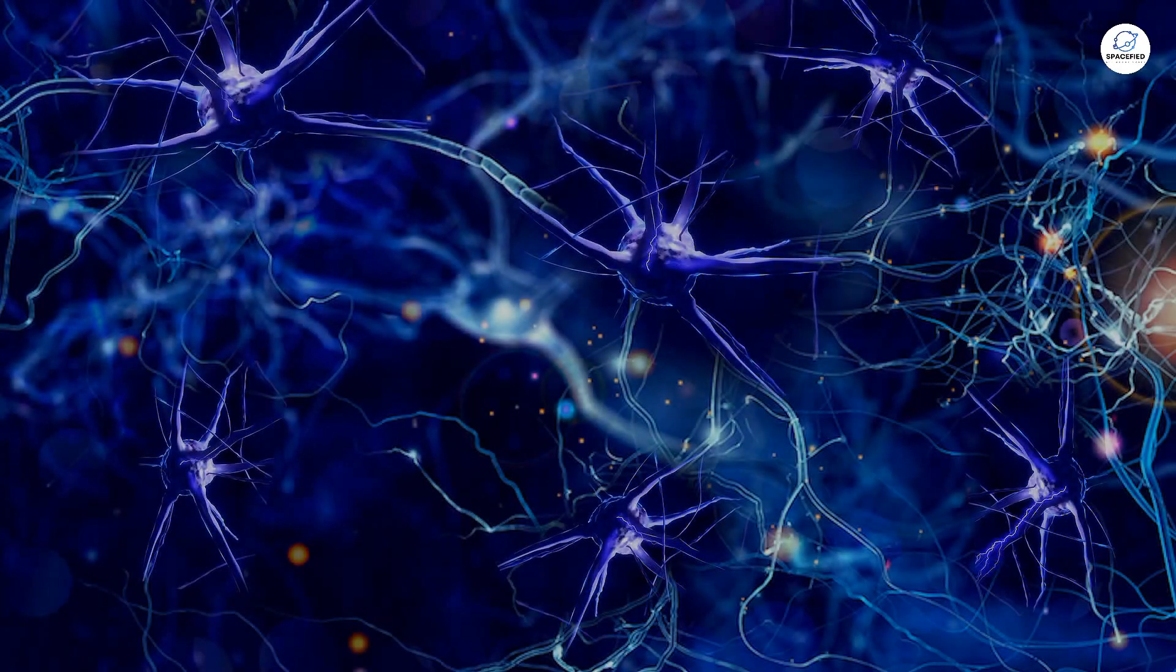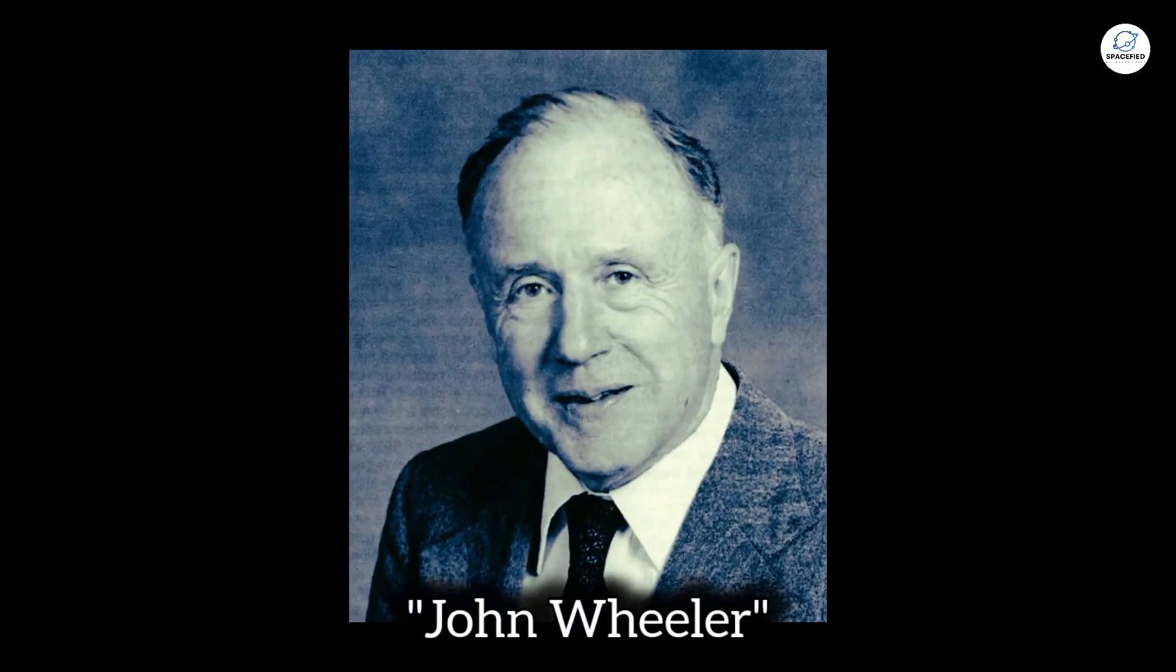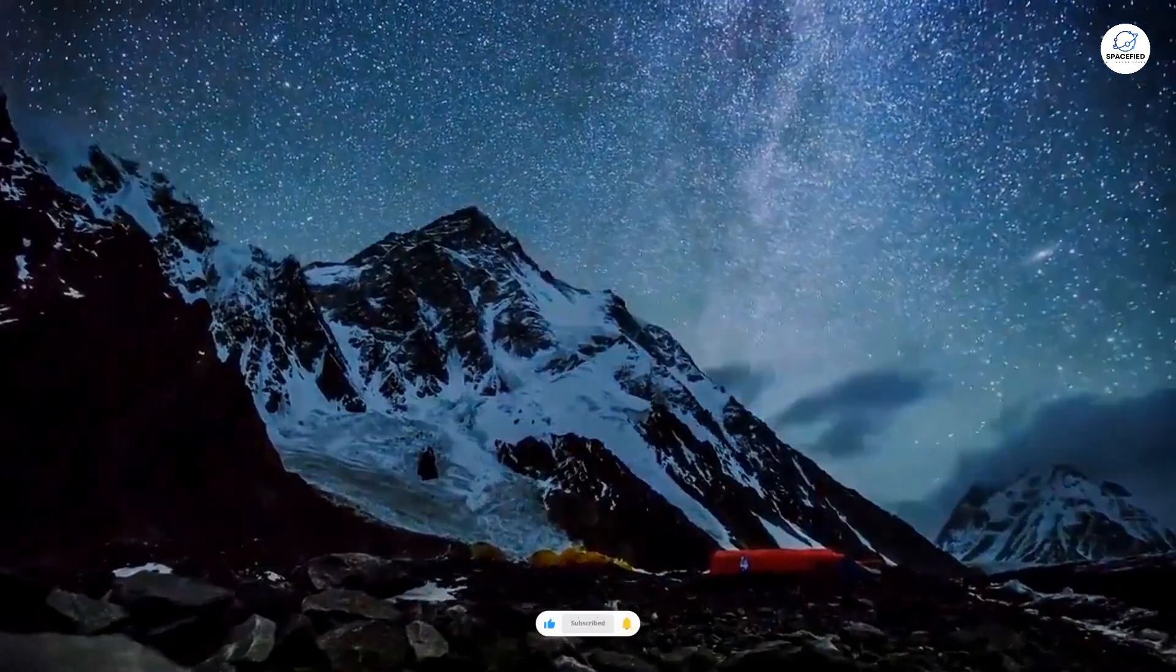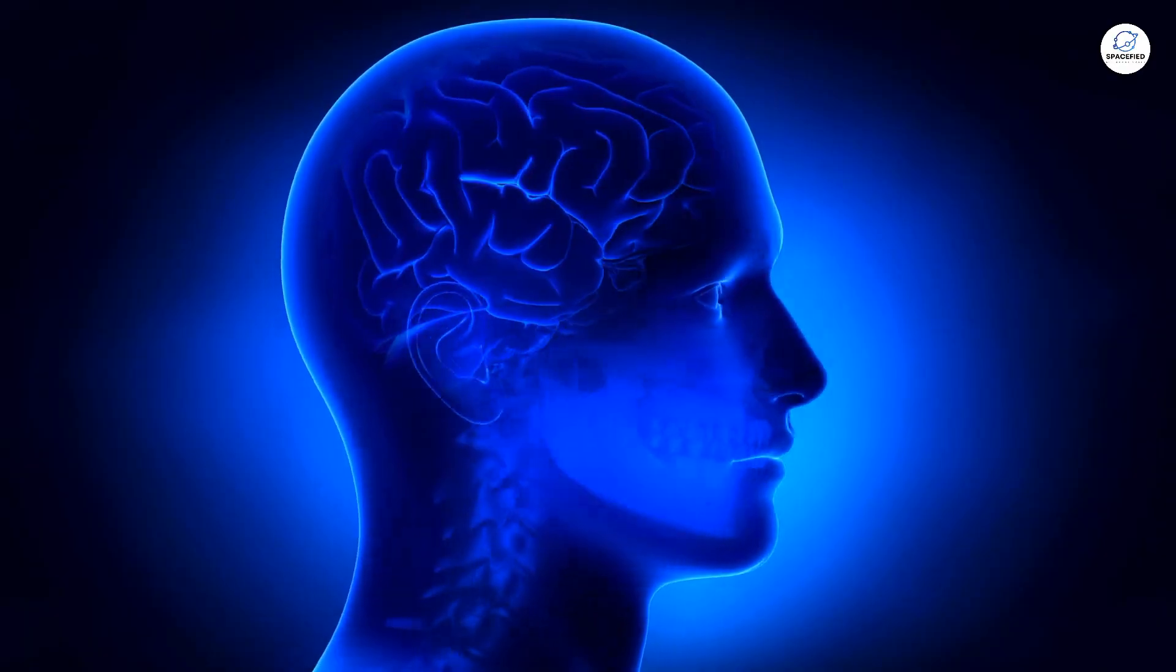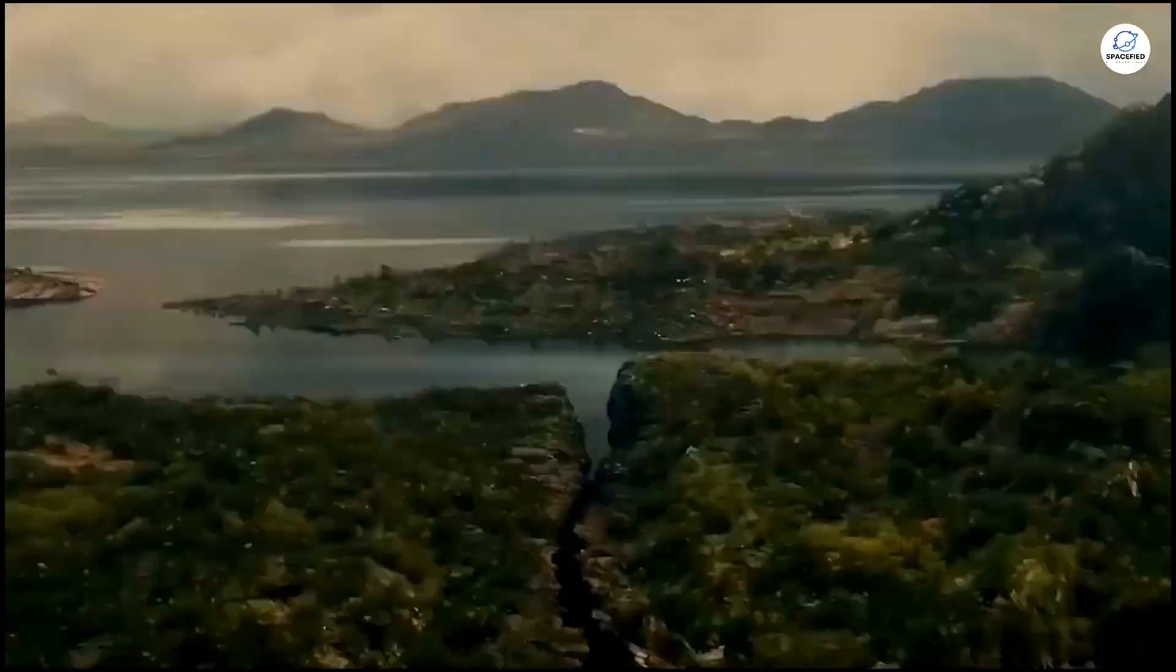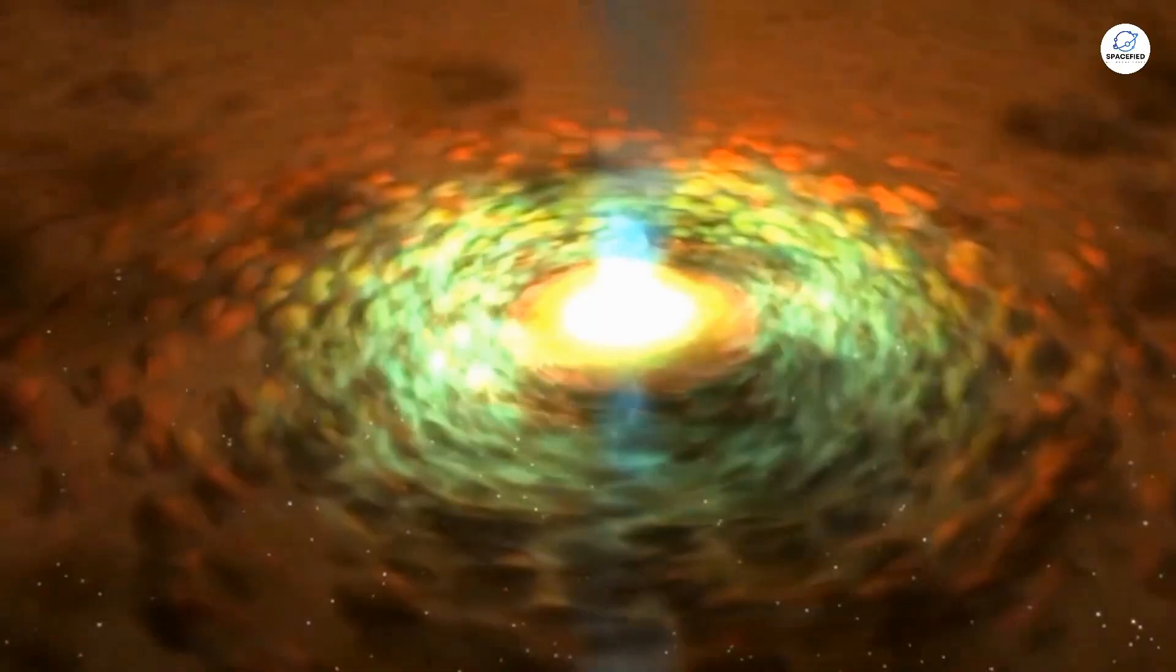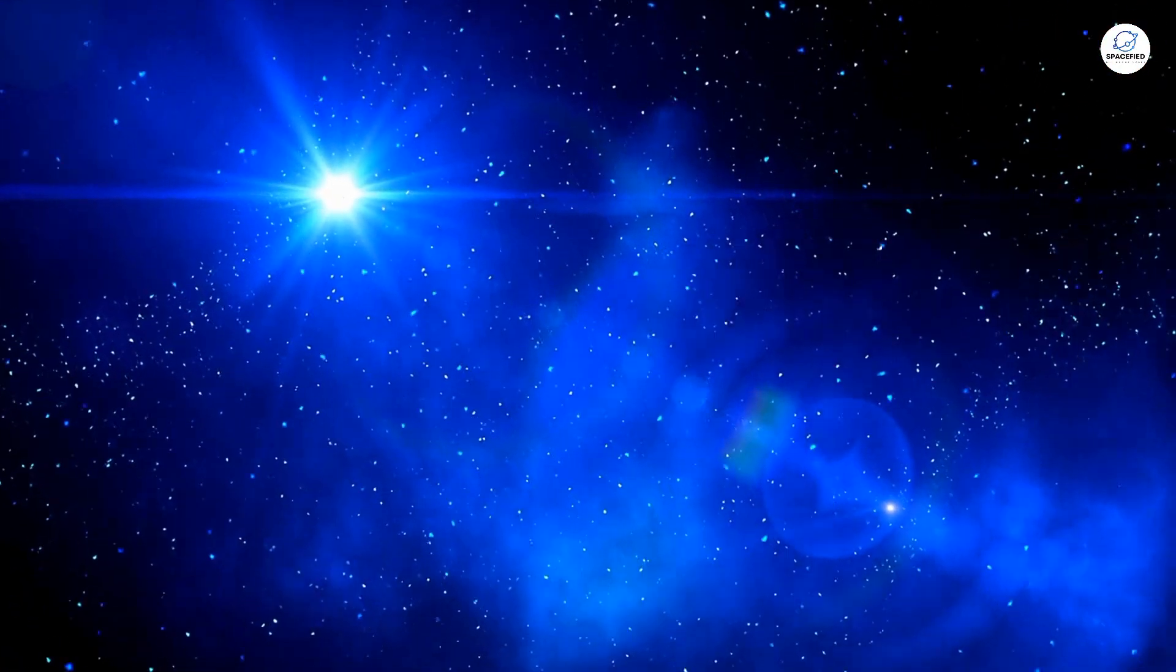Now for the ultimate mind bender. What if our entire universe is just a neuron in a larger brain? It's a concept popularized by the late physicist John Wheeler, who famously said, 'we are participators in a self-observing universe.' Imagine a being so vast that its brain encompasses our entire universe. For this being, billions of years in our time might pass in the blink of an eye. Every black hole, every galaxy, every supernova could be part of its thought process.